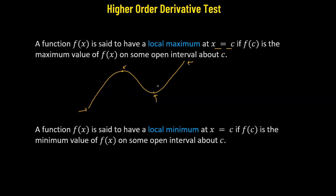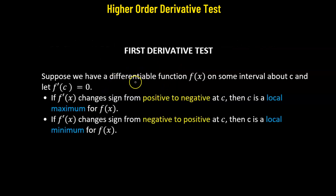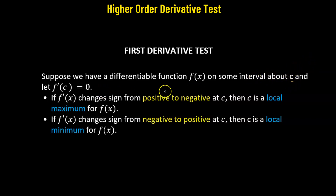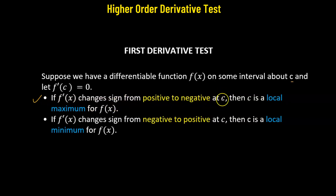Let's talk about the first derivative test. First of all, we have to check whether the function is differentiable in the given interval, around the point c where we want to check its maximum or minimum value. Then we let the value of the derivative at that point equal zero. The first thing to check: if the first derivative changes sign from positive to negative at point c, then c is considered a local maximum.